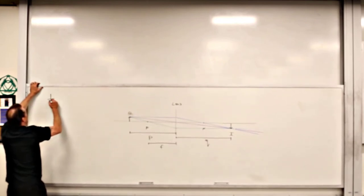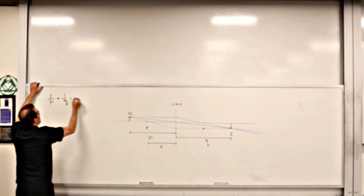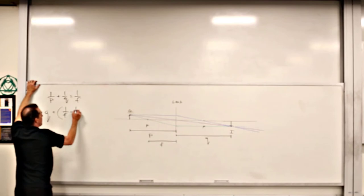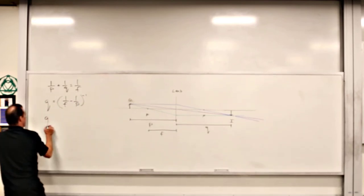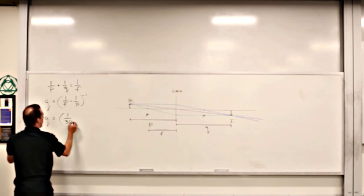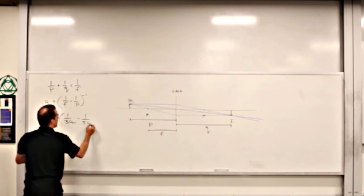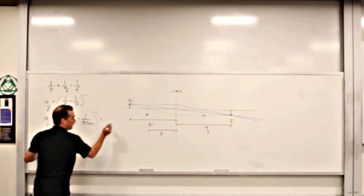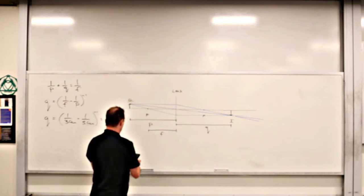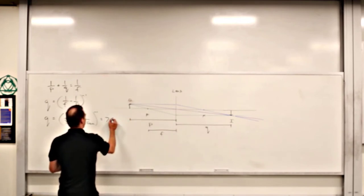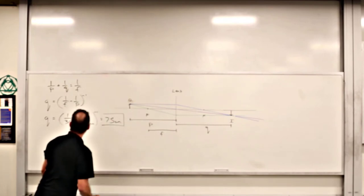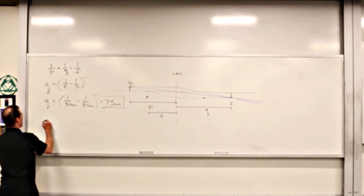Let's go ahead and calculate this out. We've got 1/P + 1/Q = 1/F, which gives us Q = (1/F − 1/P)^−1. That gives us Q = (1/30 cm − 1/50 cm)^−1, which gives us 75 centimeters.